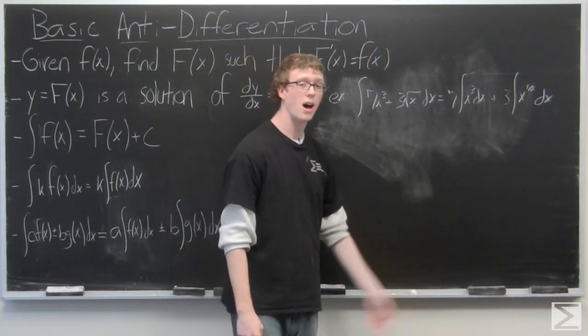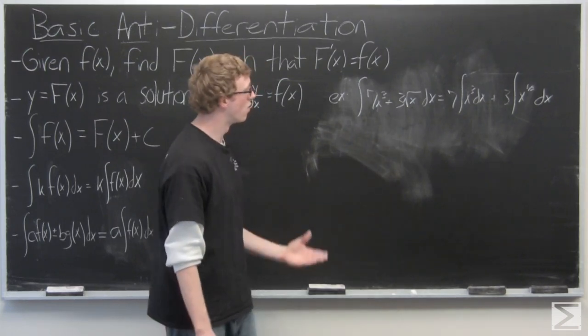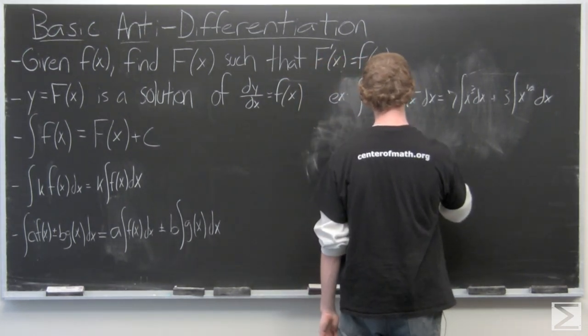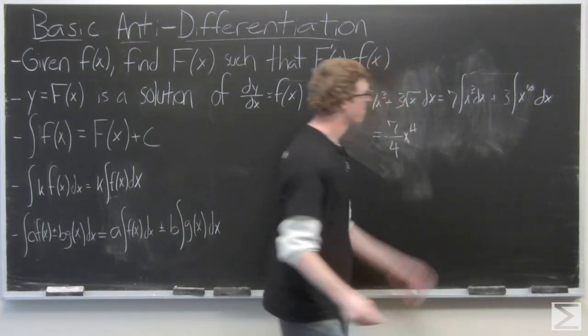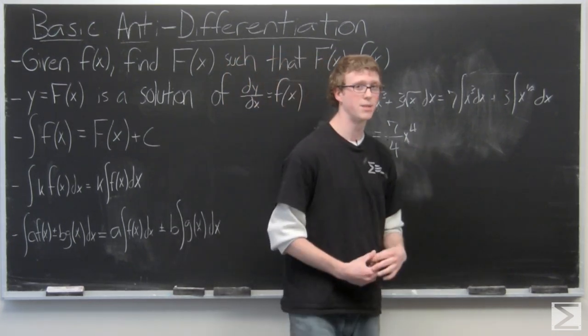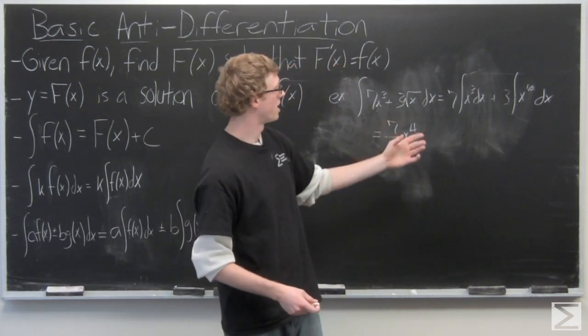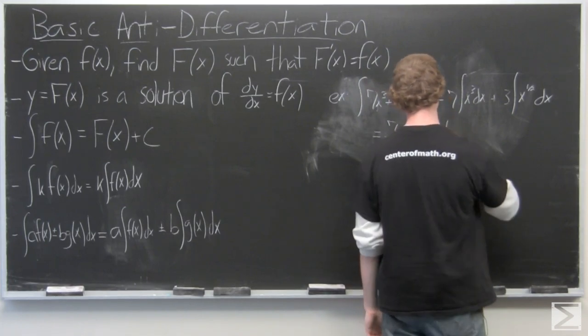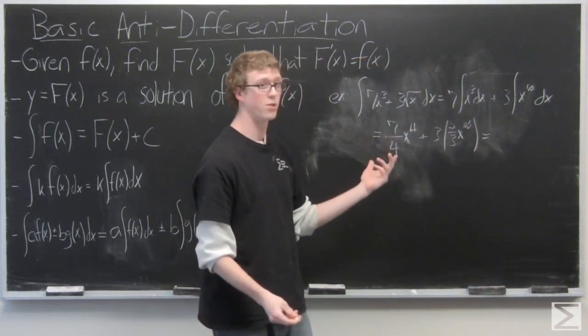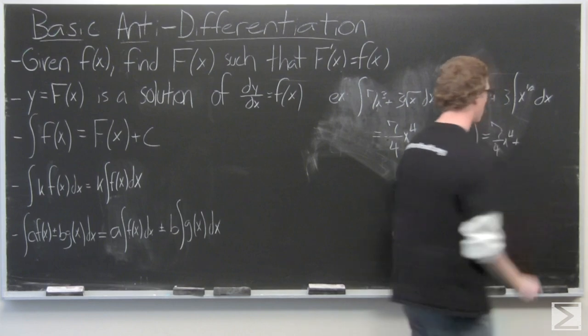Now we have two functions that we can just use the power rule for integration on and this is going to become x^4, remember p+1 over p+1, so it's going to be 1/4 x^4, you multiply it by 7, so it's 7/4 x^4. The other function is a little bit trickier to work with because we have a function to the 1/2, so 1/2 plus 1 is going to be 3/2 and then we're going to need to divide by 3/2 or multiply by 2/3, so we're going to do 3 times 2/3 x^(3/2). Which just turns out to be 2x^(3/2) and our final answer is 7/4 x^4 plus 2x^(3/2).